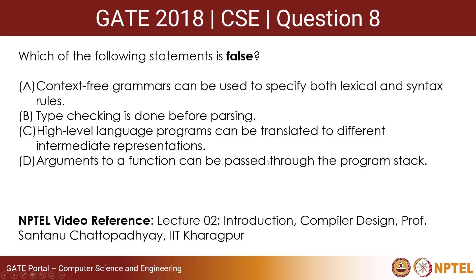Hello all. Today we will be looking at a question given in GATE 2018: Which of the following statements is false? Option A: Context free grammar can be used to specify both lexical and syntax rules. Option B: Type checking is done before parsing. Option C: High level language programs can be translated to different intermediate representations. Option D: Arguments to a function can be passed to the program stack.